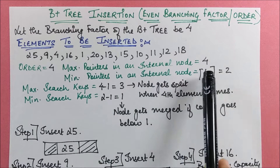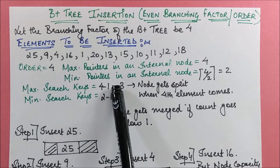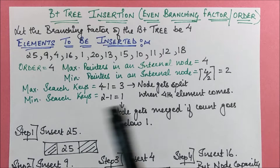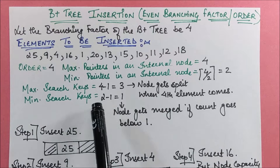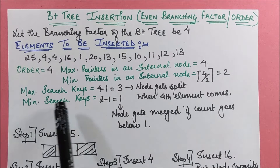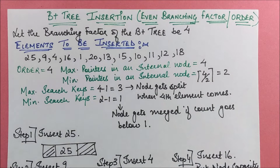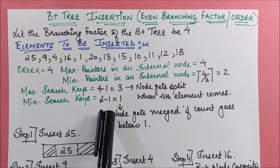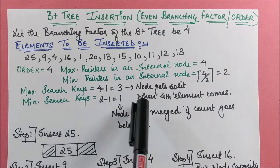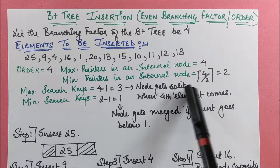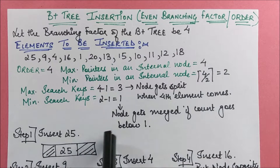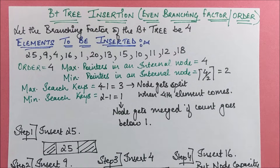The order is 4, so maximum pointers in an internal node will be 4, and minimum pointers will be ceiling of 4/2, which is 2. This implies maximum search keys will be 4 minus 1 = 3, and minimum search keys will be 2 minus 1 = 1. So each node holds minimum 1 and maximum 3 elements. A node split occurs when a 4th element arrives, and a merge occurs if the count drops below 1.